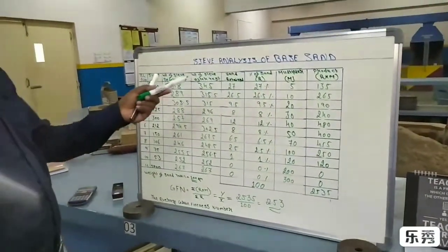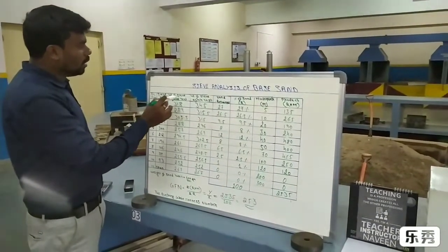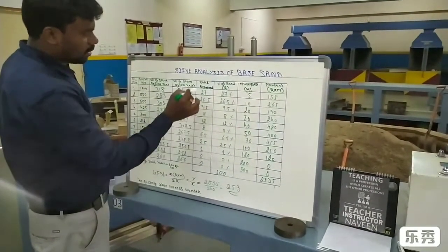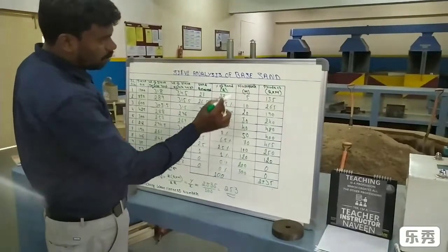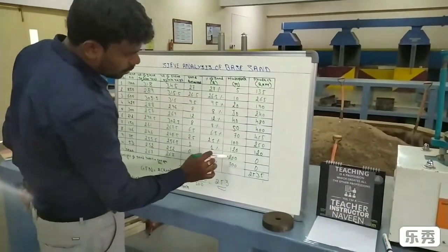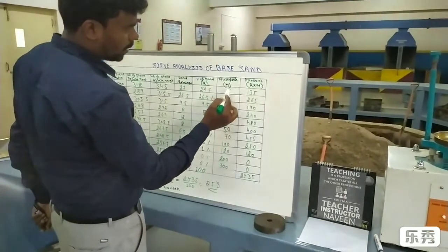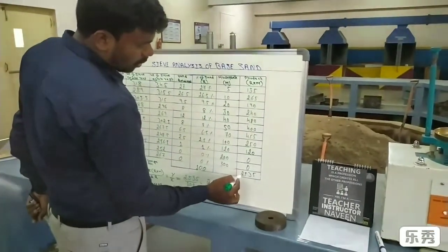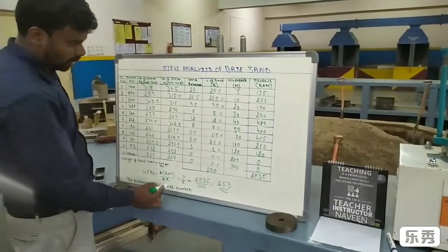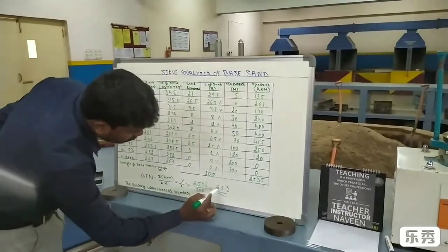We have completed the sieve analysis of the base sand. In summary: first, write the tabular column with sieve numbers; take weight of sieve before test and weight after test; find the sand return; calculate the percentage of sand; write the standard multipliers — 5, 10, 20, 30, 40, 50, 70, 100, 120, 200, 300; find the product by multiplying percentage by multiplier; total the product; then divide total product by total percentage to get GFN. The GFN is 25.3.